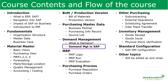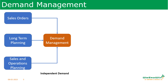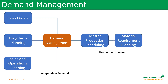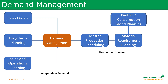After completing all the master data, we now discuss how demand management is handled in SAP. The inputs for demand management are sales orders, long-term planning, and sales and operations planning — all coming directly from the market, called independent demand. These demand plans run through master production scheduling and material requirements planning, which explode the bill of materials to purchase the material — these are called dependent demand. Consumption-based and Kanban-based planning are also dependent planning.